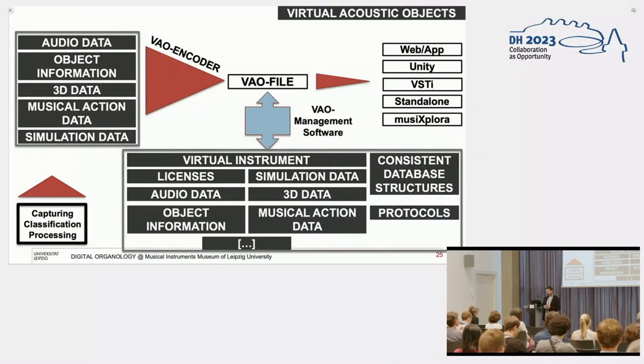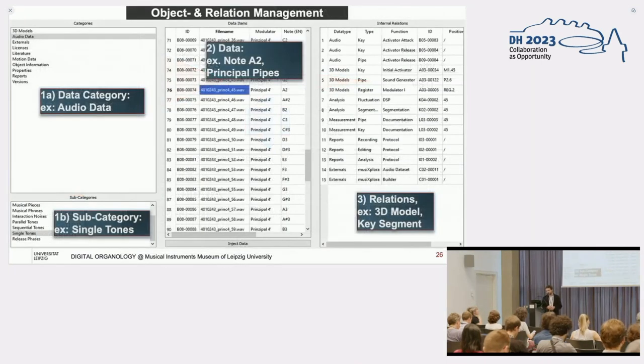This VAO concept, the Virtual Acoustic Object, needs a management software and encoding, decoding. All of these information is structured. It's always consistent, so there's no possibility to create some trash data into it. It's checked and validated. After this, we have an interface to create, after this VAO file, we can use Unity. As you've seen before, this augmented reality or VR applications are from Unity. Or we can import it to the MusicExplorer, to standalone applications. Currently working on the web and app development platform.